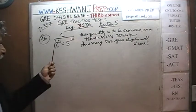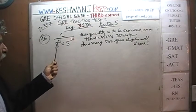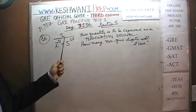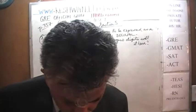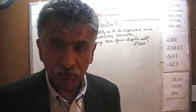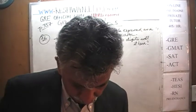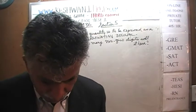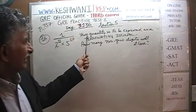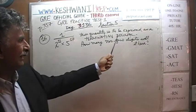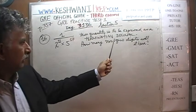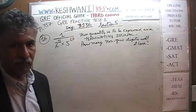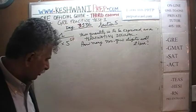This is what the problem says. We are given the quantity 1 over 2 raised to the 11th times 5 raised to the 17th. We are told to express this as a terminating decimal. The question is: how many non-zero digits will it have?